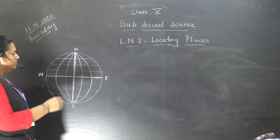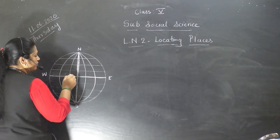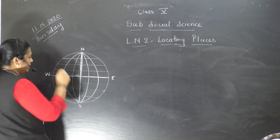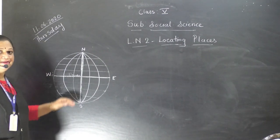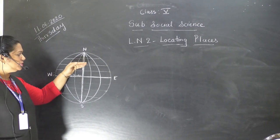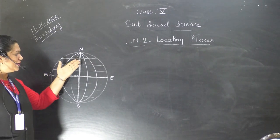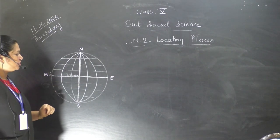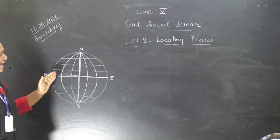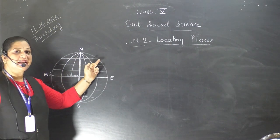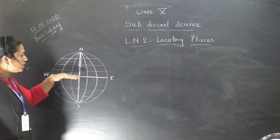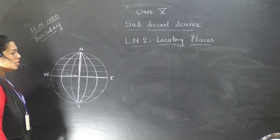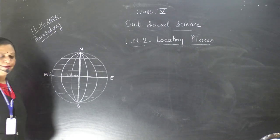This is the equator, which is marked as zero degree, and this equator divides the earth into two parts: the northern hemisphere and the southern hemisphere. The imaginary lines which run parallel to the equator are called parallels of latitude.